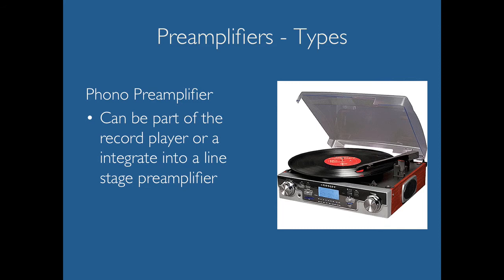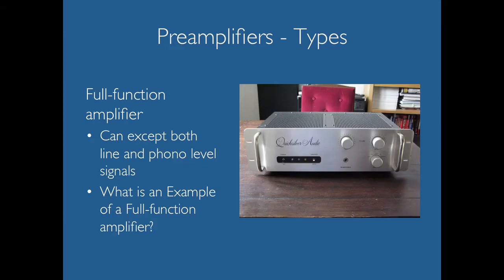This phono preamplifier can be part of the record player — built right in — or it can be integrated into a line stage preamplifier. If that's the case, you get probably the most common type of preamplifier in most high-end audio systems, which is the full function amplifier. It can accept both line level and phono level signals.